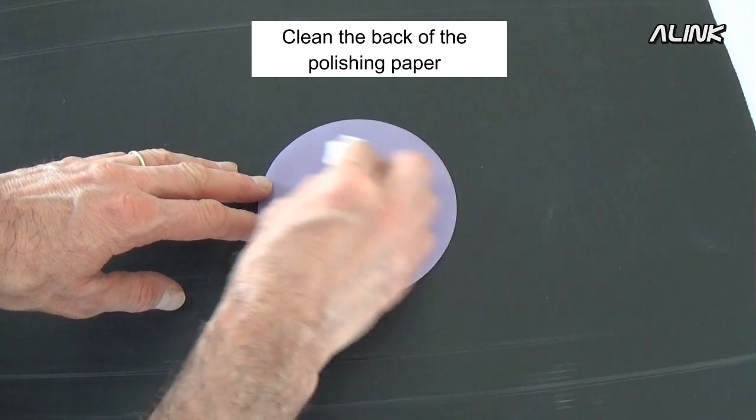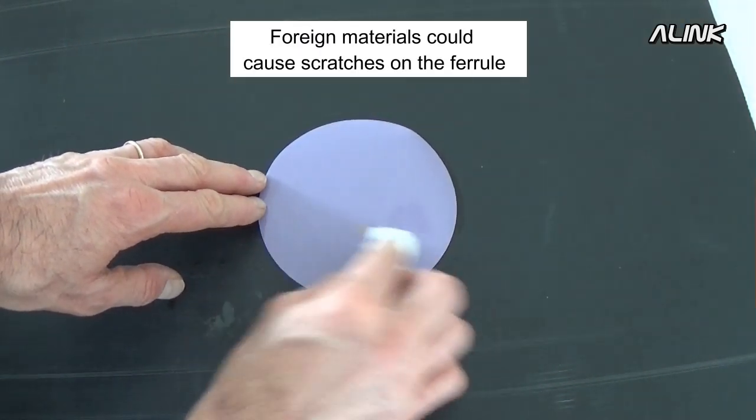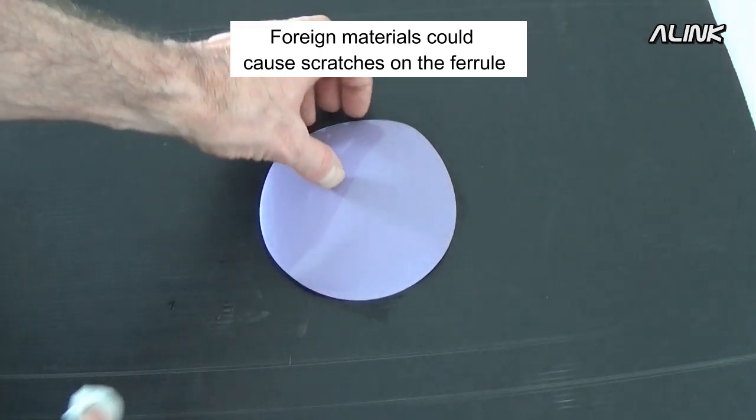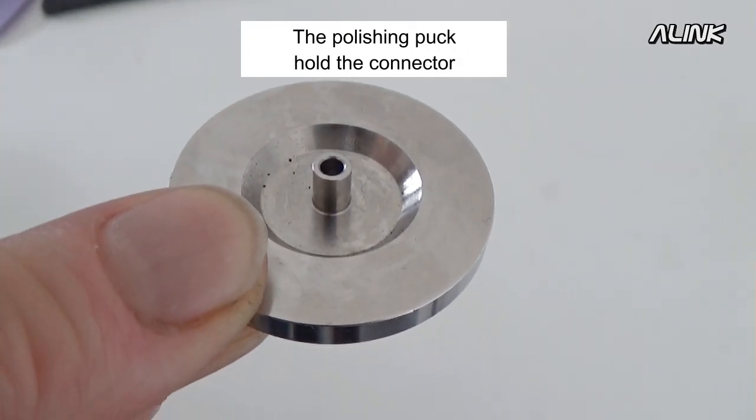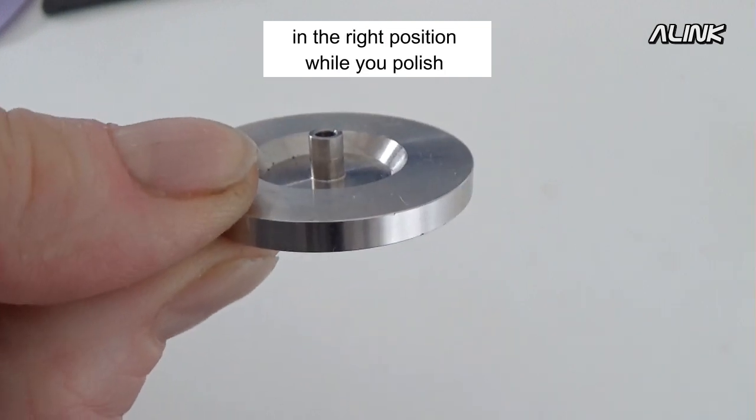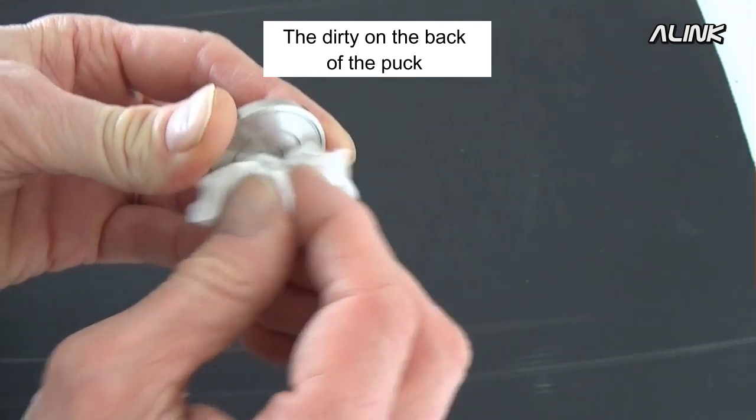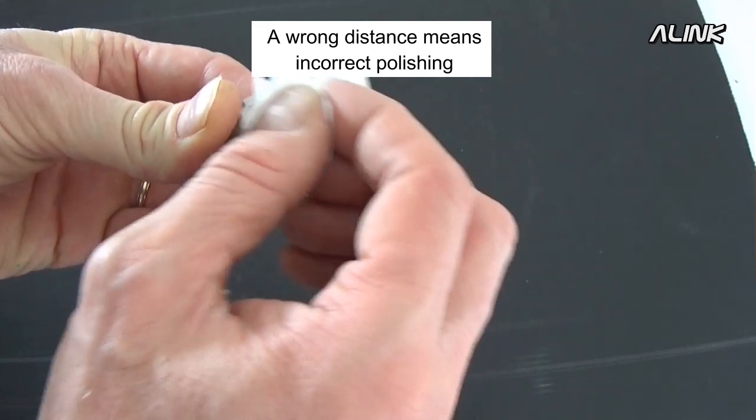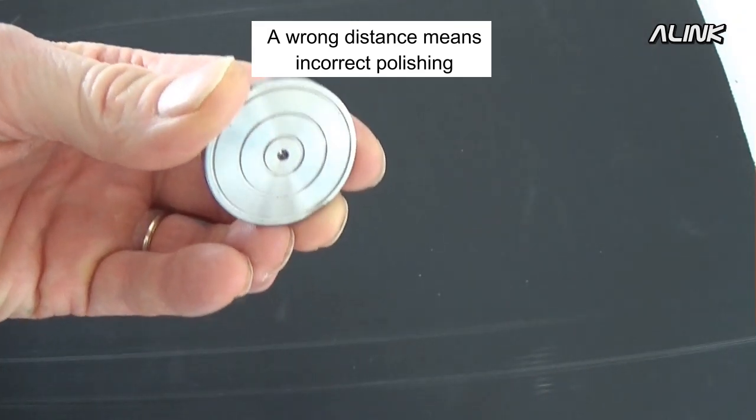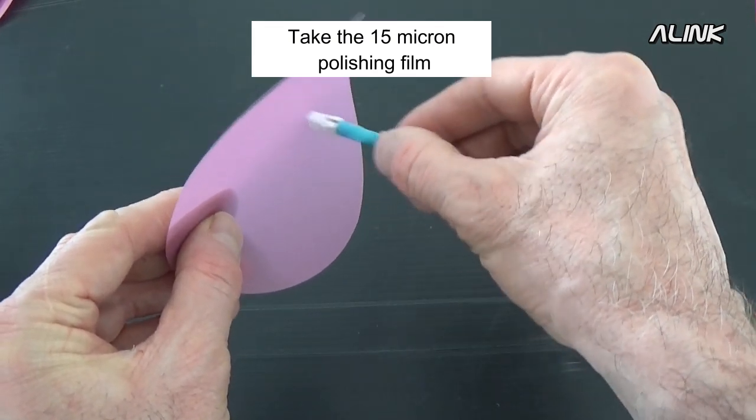Clean the back of the polishing paper with isopropyl alcohol. Foreign material can cause scratches on the ferrule. Clean the polishing puck too. The polishing puck holds the connector in the right position while you polish. The dirt on the back of the puck prevents the ferrule from protruding through the holder at the proper distance. A wrong distance means incorrect polishing.